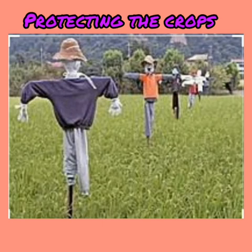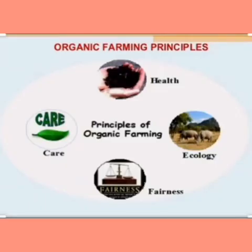Nowadays, we should follow organic farming. Organic farming is a method of farming in which manure produced from biodegradable waste is used instead of chemical fertilizers. This improves soil fertility and results in better yield and a healthier crop. The food produced by organic farming is called organic food. Organic food is healthier than food grown using chemical fertilizers.